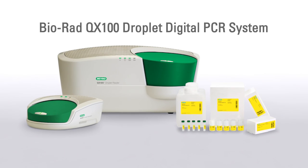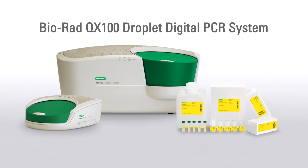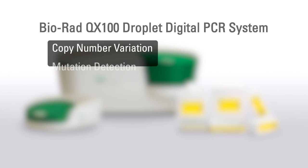The accuracy, sensitivity, and precision of Droplet Digital PCR enable a wide variety of applications that require accurate, absolute quantification. Examples of these applications include copy number variation, mutation detection, and gene expression.